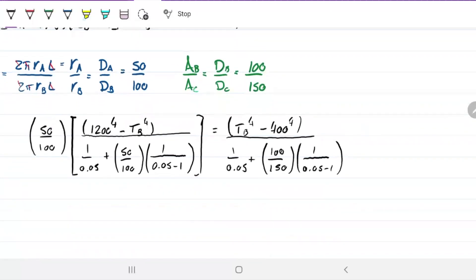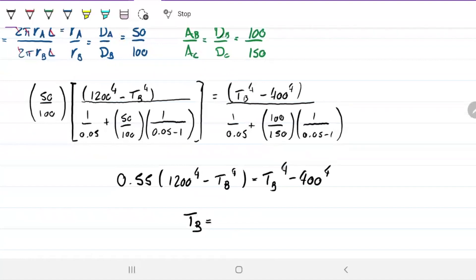To solve this, you'll do this sum, you do this sum, and then you'll send this guy multiplying over there. And then you're going to combine this term, this term, and this term. And what I got when I did that was 0.55 multiplying 1200 to the fourth minus TB to the fourth equals TB to the fourth minus 400 to the fourth. And then you solve for TB, you get 932.9 Kelvin. So that will be temperature of B when we reach steady state. That will be the temperature of B that does not change with time anymore.